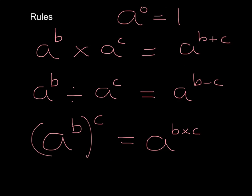Here are the four rules to take away from this video: When we have a times and the bases are the same, we add the powers. When we have a divide and the bases are the same, we subtract the powers. When we have brackets and two powers, we multiply the powers. And if we have the power of 0, that's automatically the value of 1.